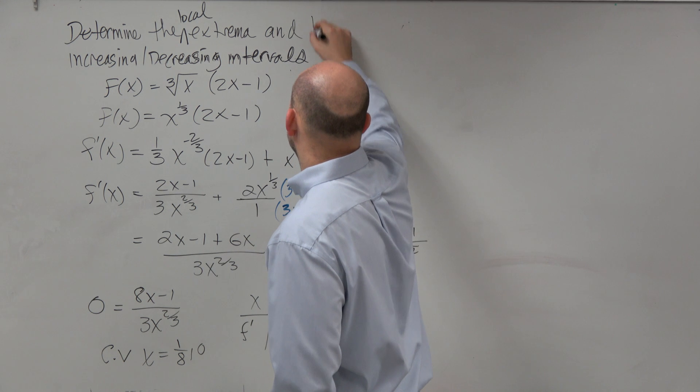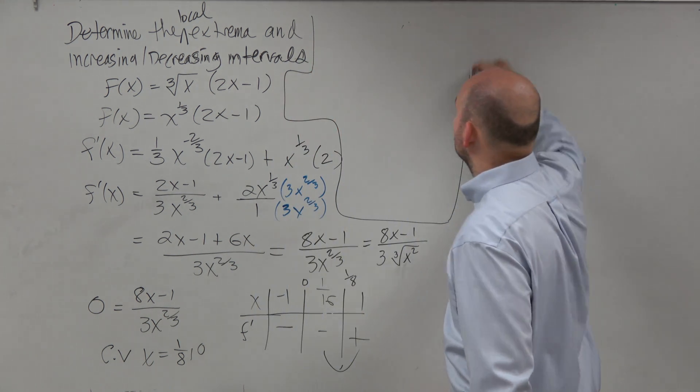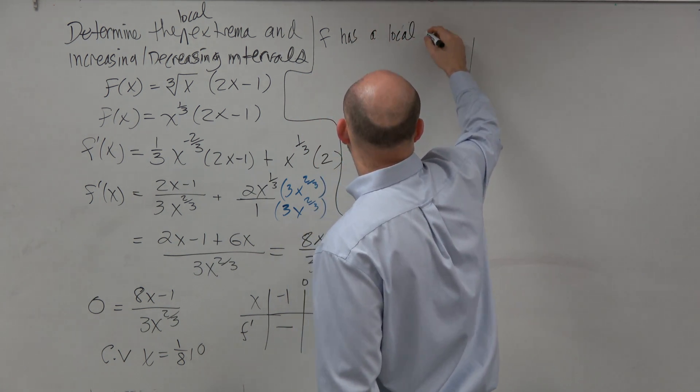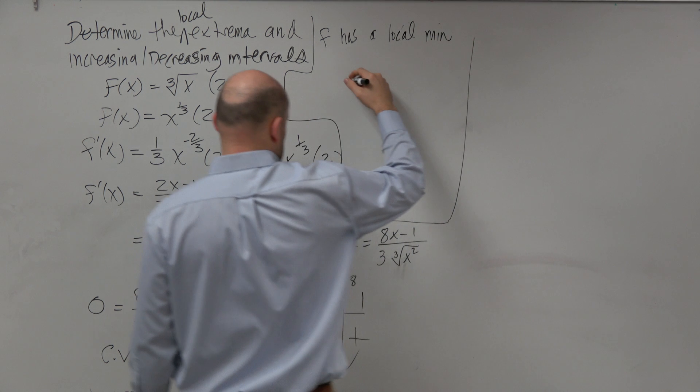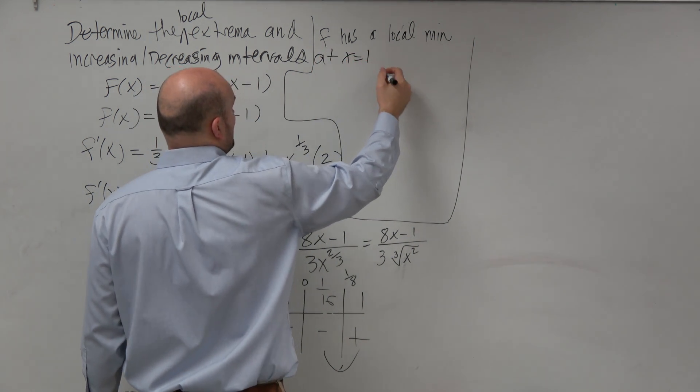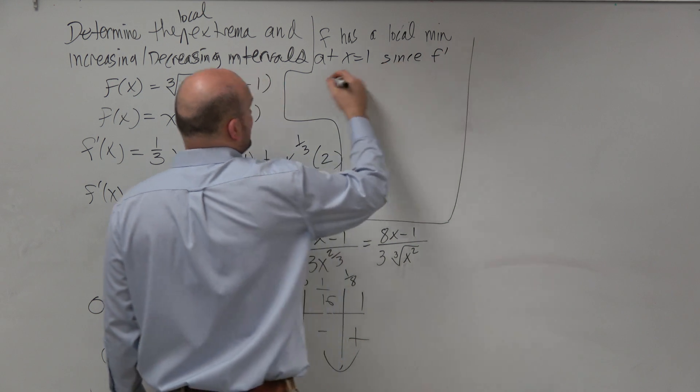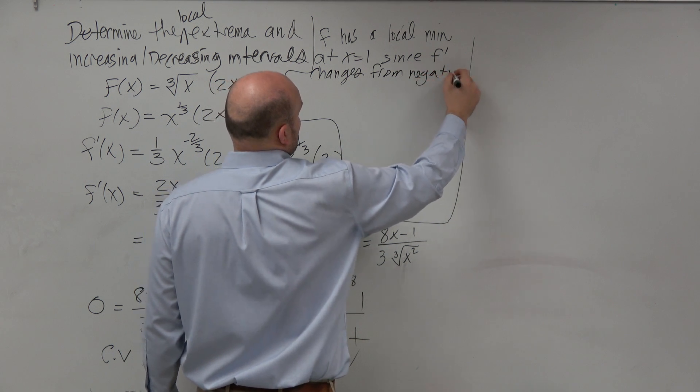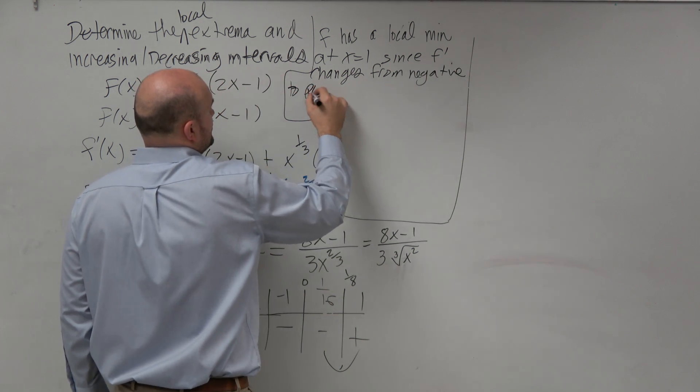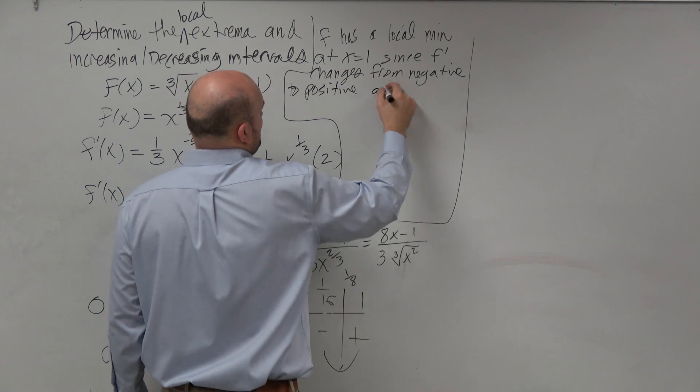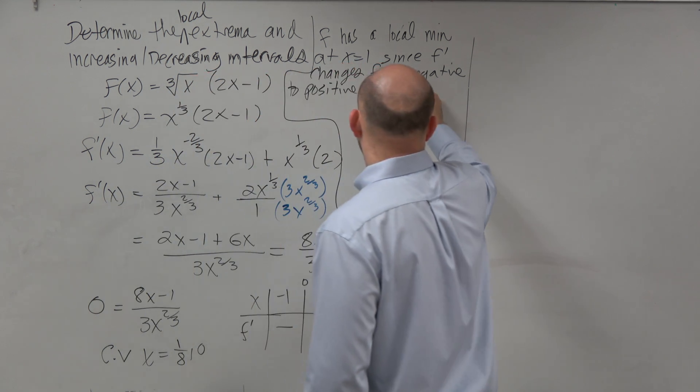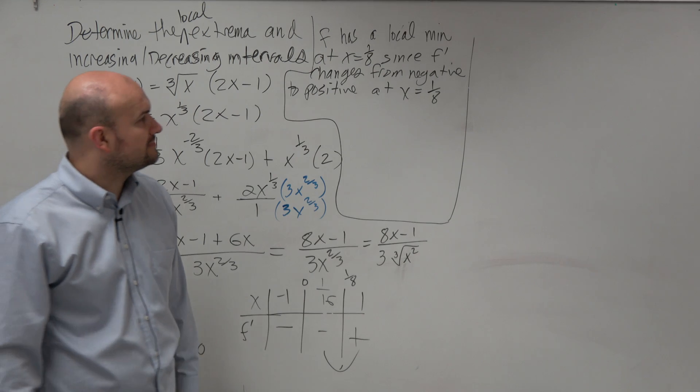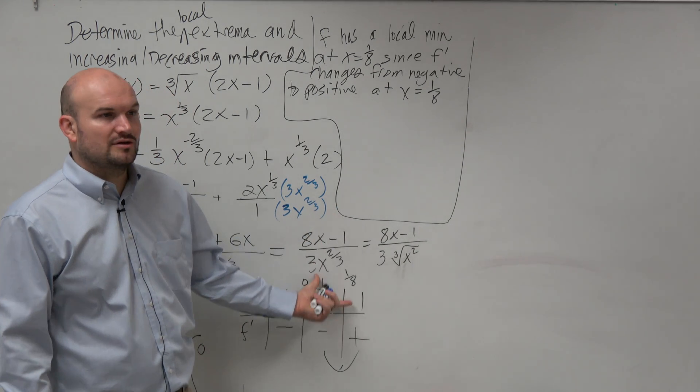So therefore, we could say f has a local min at x = 1/8, since f' changes from negative to positive at x = 1/8. Yeah, I wrote it right there. See, I'm the one that's not being careful, right? Yeah, so make sure you guys are talking about your critical values, not your test points.